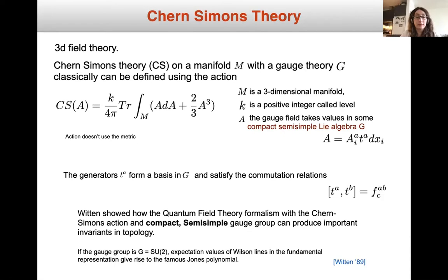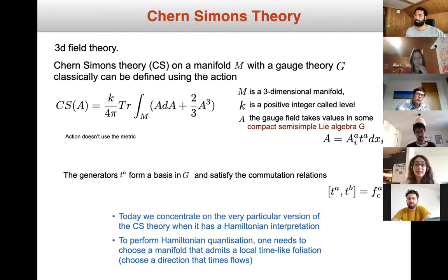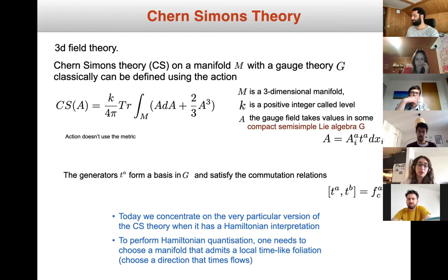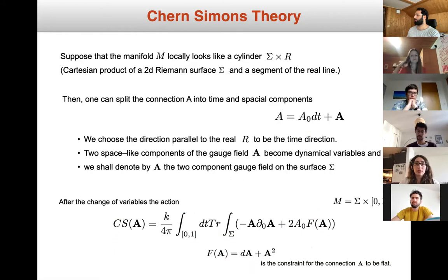Today I'd like to concentrate on a very particular version of this Chern-Simons theory called the Hamiltonian interpretation. To perform this Hamiltonian quantization, one needs to choose a manifold that admits a local time-like foliation, which means we can choose a direction along which time flows. Let me explain exactly what that means.